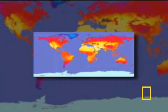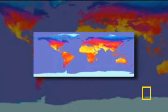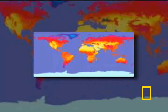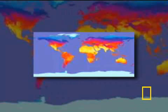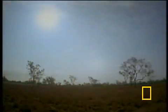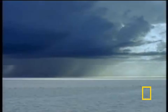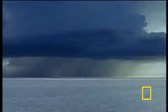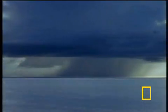Warm, moist air near the equator rises and flows toward the poles. Cool, polar air sinks and flows back toward the equator. As this air whips across the Earth's surface, it continuously interacts with the land and sea, exchanging heat and moisture and creating our ever-changing diversity of weather.